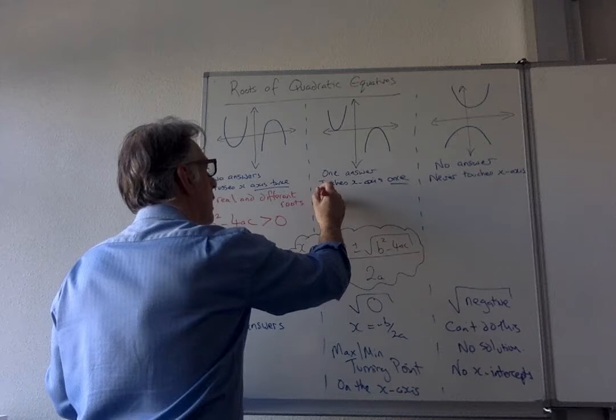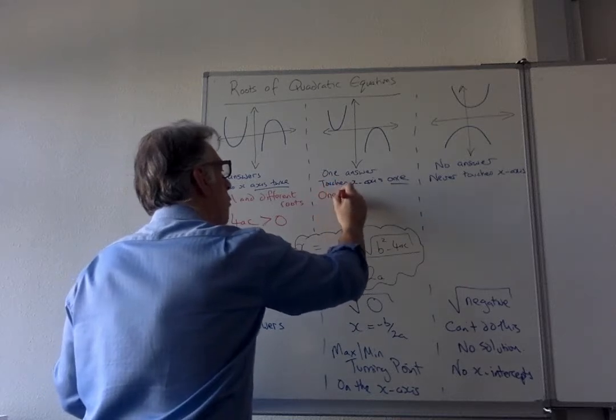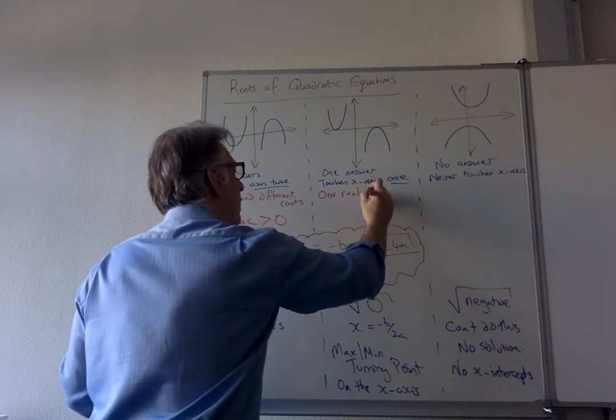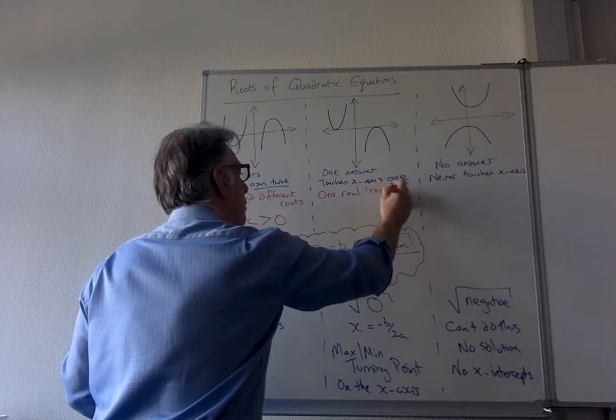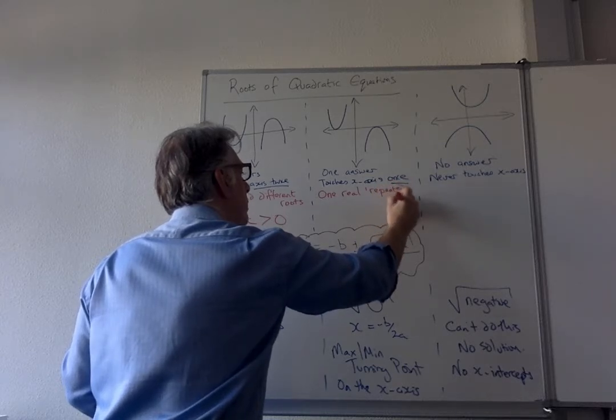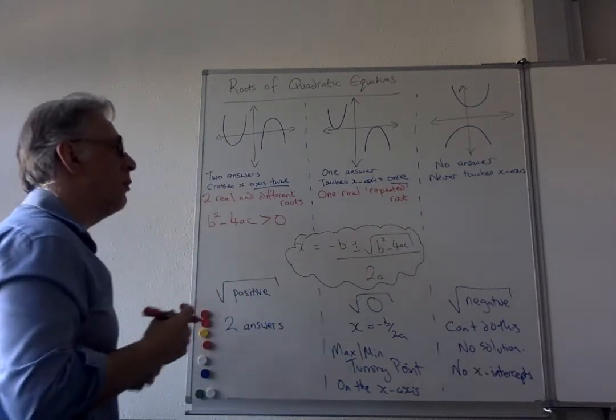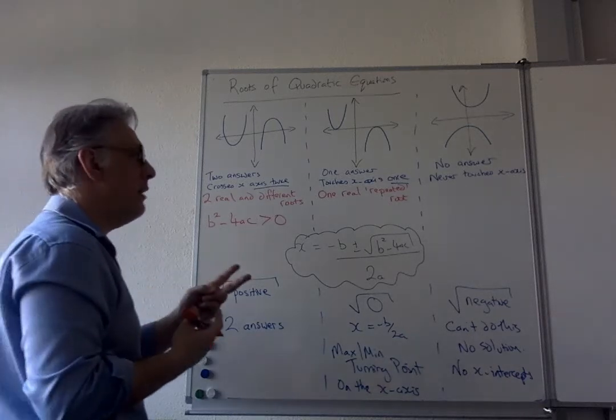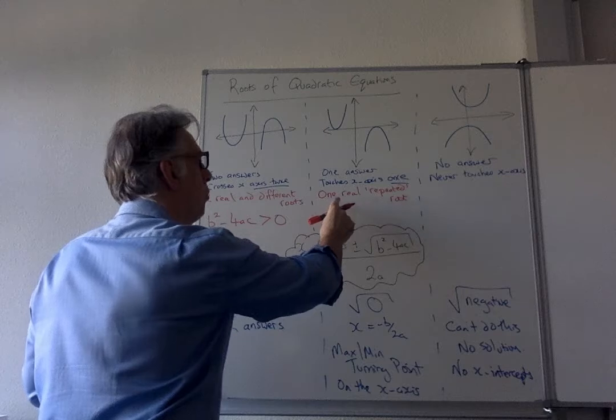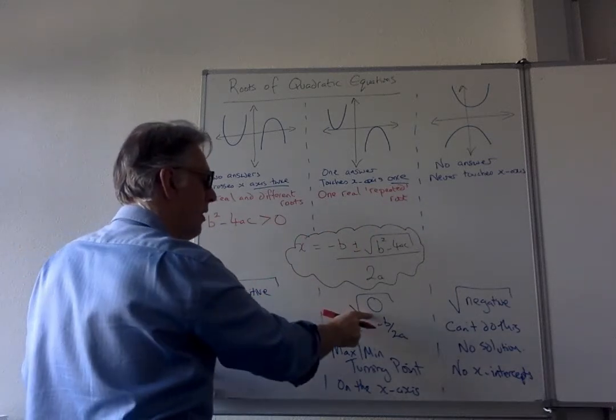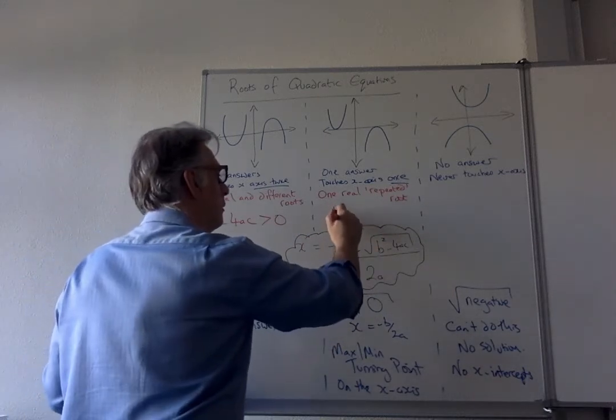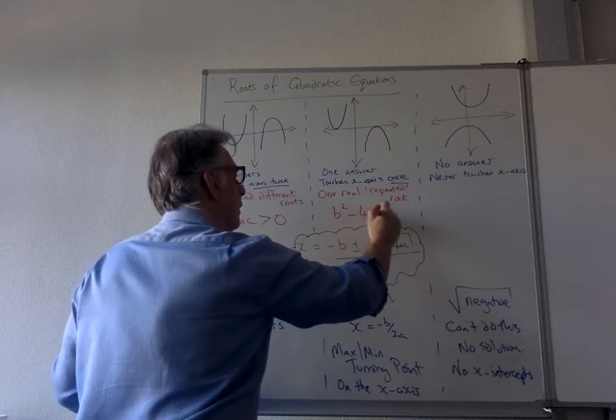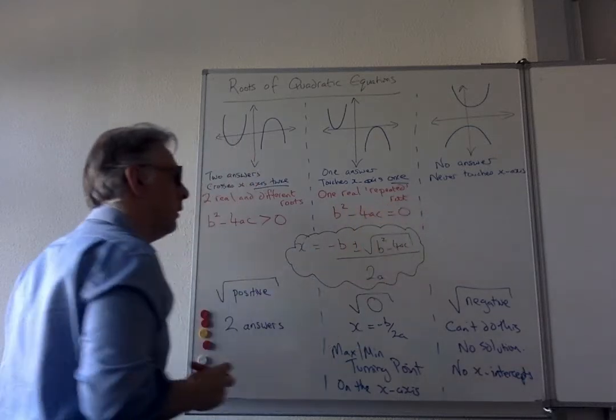When we have this one, we get what we call one real, sometimes they call it also a repeated root, because when you're doing it algebraically, the answer comes out twice. So you might get x equals 5 and x equals 5. So it's two answers, but it's the same number. So it's one real repeated root. That happens when this is zero.